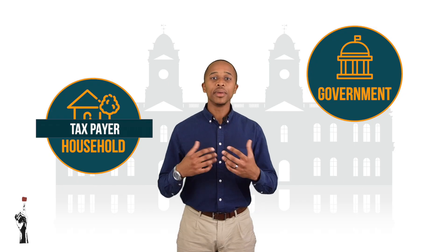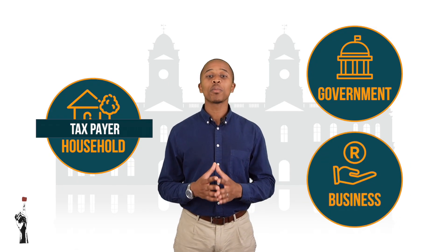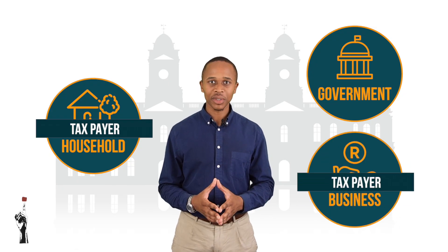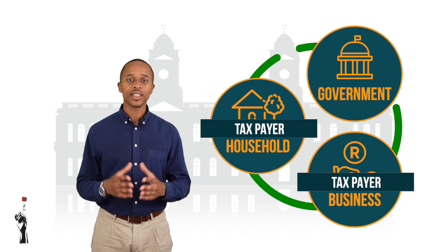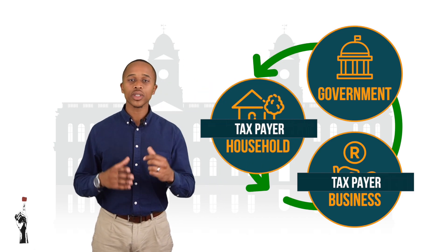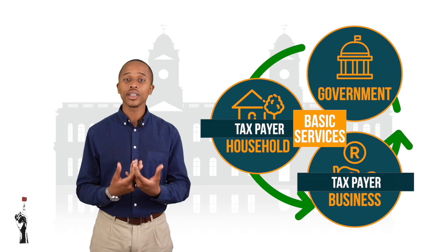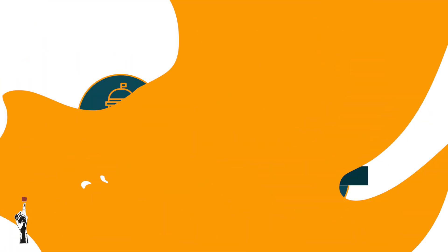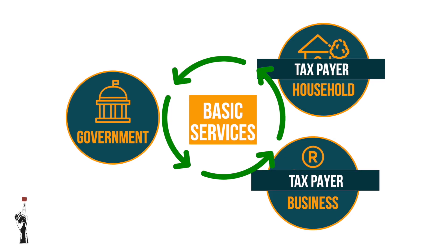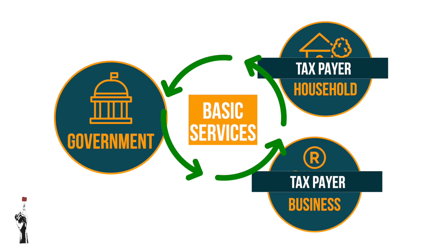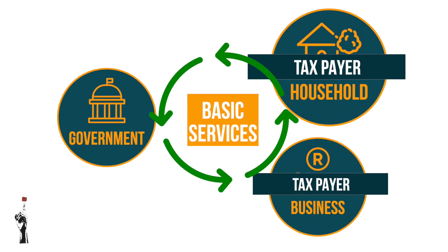It is important to realize that it is not only households that pay taxes to the government — businesses also pay taxes. In return, the government uses those taxes to provide households and businesses with basic services. As you can see, this is a cycle of interactions amongst the government, businesses, and households.